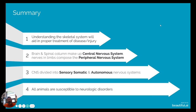To wrap up unit three, the skeletal system aids in proper treatment of disease and injury. The brain and spinal column make up the central nervous system, and the limbs compose the peripheral nervous system. The central nervous system is divided into sensory somatic and autonomic nervous systems — things that work based on stimulus and things that work automatically. All animals are susceptible to neurological disorders, so it's important to understand what can happen in order to troubleshoot, prevent, and diagnose disease. Thanks for tuning in.